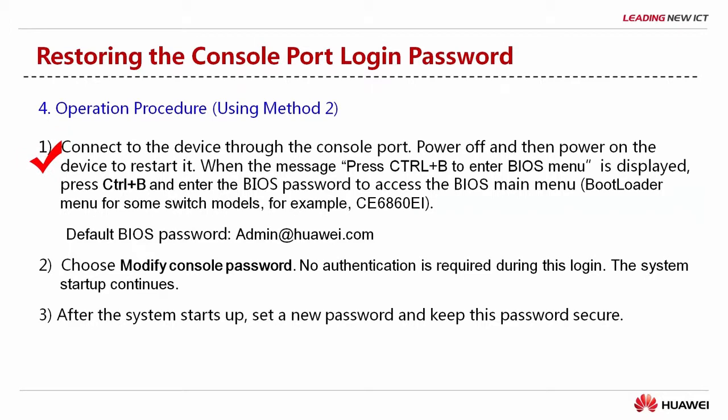First, log into the device through the console port, then power off and power on the device to restart it. When the message "Press Ctrl-B to enter BIOS menu" is displayed, press Ctrl-B and enter the BIOS password to access the BIOS main menu. Note that some switch models use the bootloader menu. By default, both BIOS and bootloader passwords are admin@huawei.com.